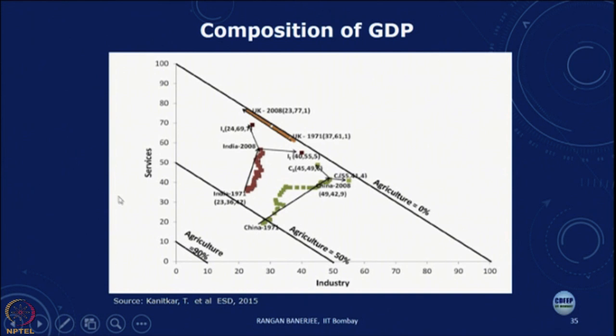A tri-plot with agriculture, industry, and services shows that China has grown by substantially increasing its industry share, while in the Indian context the industry share has been more or less constant. India has the option of either going for high-services growth or high-industrial growth, and this choice will have a significant impact on the kind of energy use going forward.